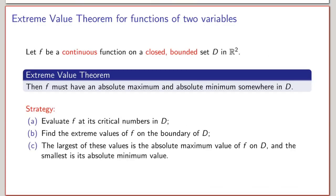With these definitions we can now state the extreme value theorem for functions of two variables. Let f be a continuous function on a closed bounded set D in R². Then the extreme value theorem states that f must have an absolute maximum and an absolute minimum somewhere in D.